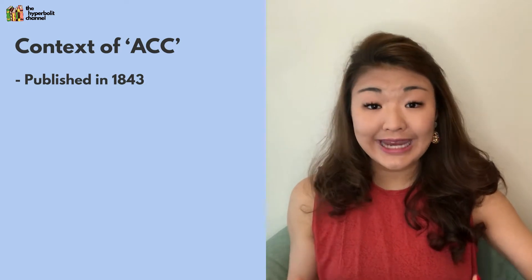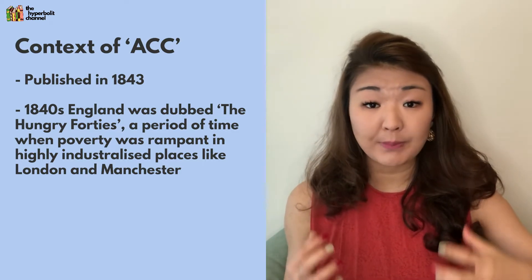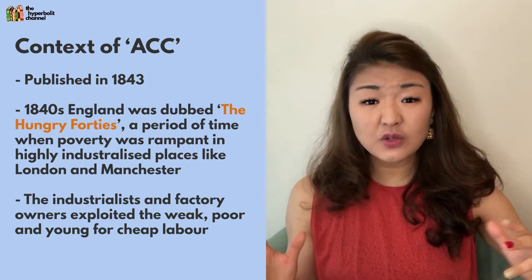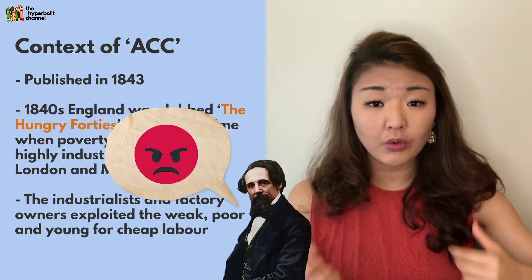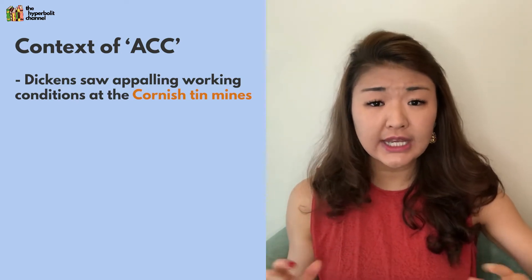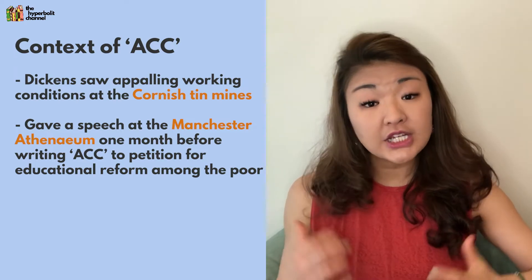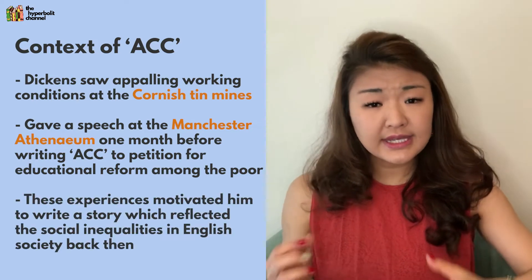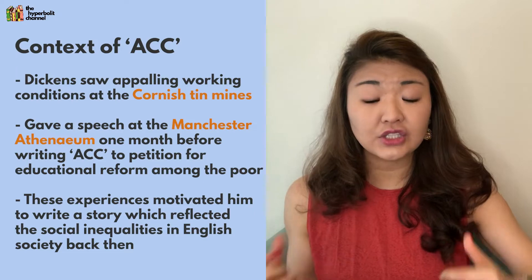Dickens published A Christmas Carol in 1843, during a period dubbed the Hungry Forties, when poverty and destitution were rampant in England, especially in highly industrialised places like London and Manchester. The industrialists and factory owners had little qualms about exploiting the weak and the poor, including children, for cheap labour, and Dickens felt strong moral outrage towards this social injustice. After visiting the Cornish tin mines and witnessing children working in appallingly inhumane conditions, he delivered a speech at the Manchester Athenæum petitioning for educational reform, which — combined with his socialist sympathies — led him to write a story reflecting the wealth and power inequalities in English society.